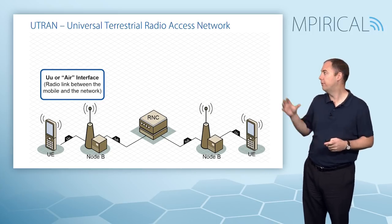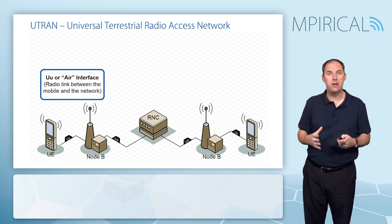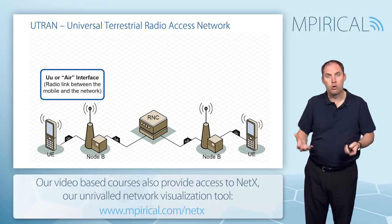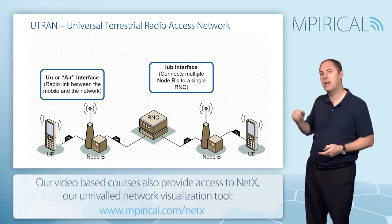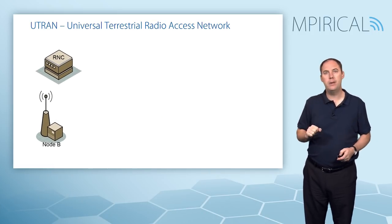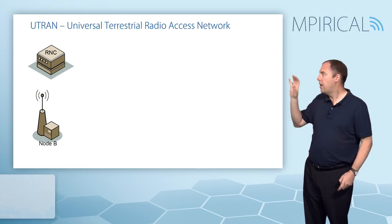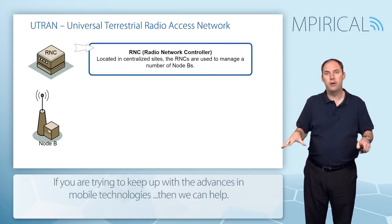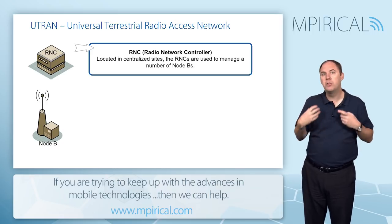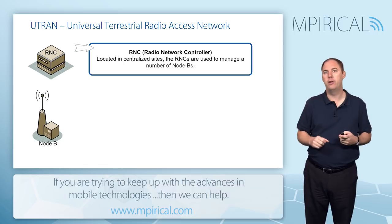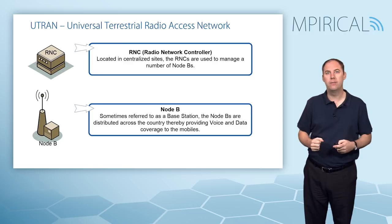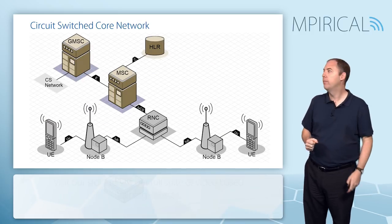The UTRAN consists of Node Bs and RNCs. The Node Bs are the base stations; the RNCs are the Radio Network Controllers — the controlling function. These are connected using the IUb interface. The RNC looks after lots of Node Bs. When the mobile comes onto the system, it's actually wanting to talk to the RNC, not the Node B. The Node B is more of a relay but it handles the air interface.